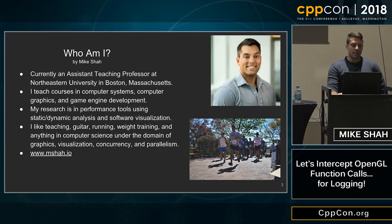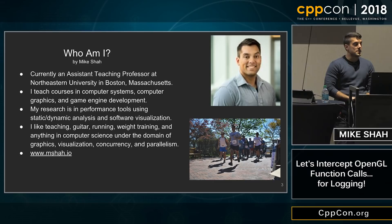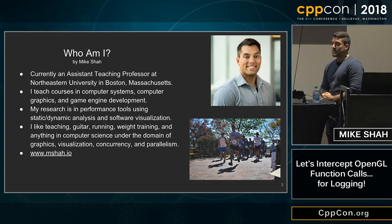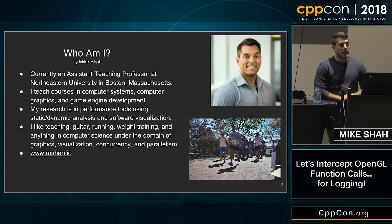Just who am I? Right now I'm an assistant teaching professor at Northeastern University. I teach courses in computer graphics and computer systems — that's my area. Research-wise, I'm interested in static and dynamic analysis. Come talk to me about that and software visualization. As a person, I'm a teacher, runner, weightlifter, and rock climber when I'm not doing computer science things.